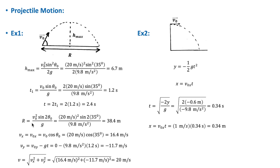The range R = 20² × sin(2 × 35°) / 9.8 = 38.4 meters. The x component of velocity just before the ball hits the ground is constant throughout the flight and equals the initial x component: v_x = v₀ cos θ₀ = 16.4 m/s.